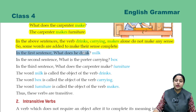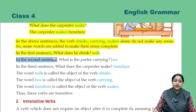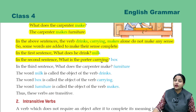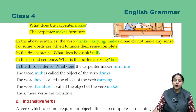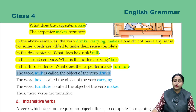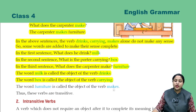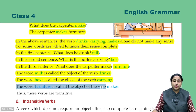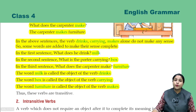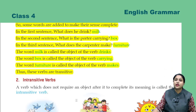In the first sentence, what does he drink? Milk. In the second sentence, what is the potter carrying? A box. In the third sentence, what does the carpenter make? Furniture. The word 'milk' is the object of the verb 'drink'. Similarly, 'box' is the object of the verb 'carrying', and 'furniture' is the object of the verb 'makes'. Thus, these verbs are transitive.